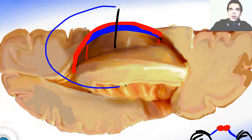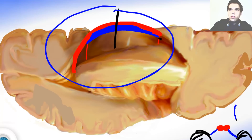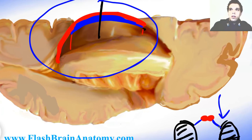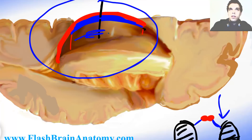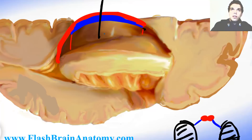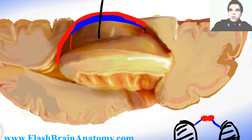Looking from above we see the telachoroidia here, the fornix on each side, and the lamina affixa on the thalamus. The thalamus is right beneath the lamina affixa. So the medial wall is created by the telachoroidia and the fornix, and the floor is created by the lamina affixa on the thalamus.